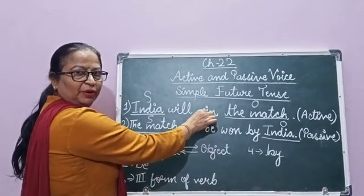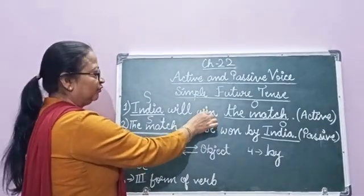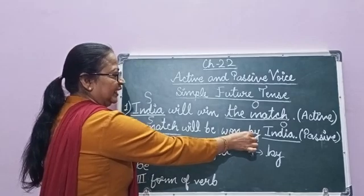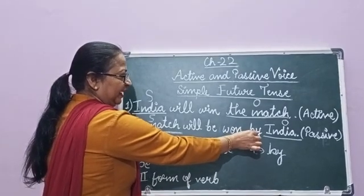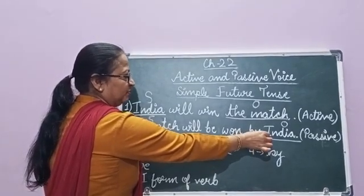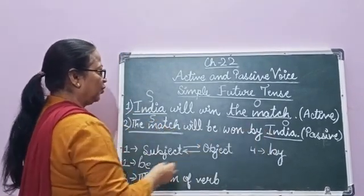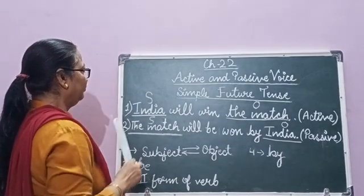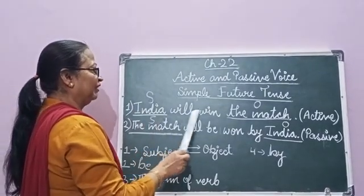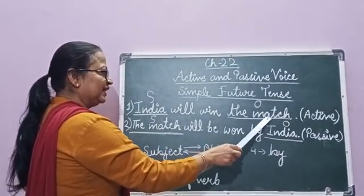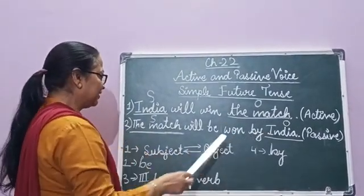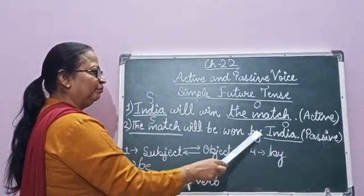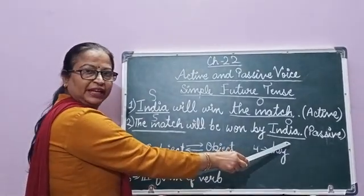Win is the first form and the third form of win is 'won'. We add 'by' before the object. So in active voice it is: 'India will win the match.' And in passive voice it becomes: 'The match will be won by India.'